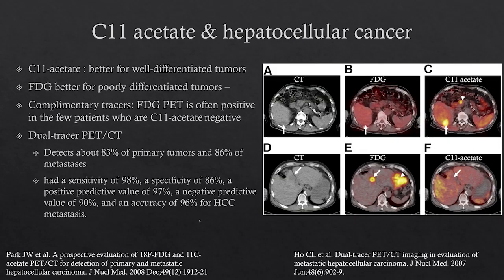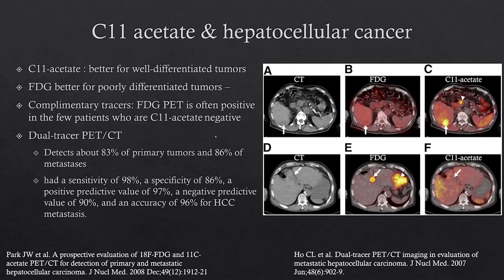Another tracer used along with FDG for hepatocellular carcinoma is C11-acetate. Similar to choline, it's better for more well-differentiated tumors while FDG is better for poorly differentiated tumors — they complement each other. For example, you may see no uptake on FDG but focal uptake on C11-acetate for one lesion, and conversely another lesion with focal uptake on FDG but no uptake on C11-acetate. Lesions not avid for one tracer may be avid for the other. By combining the two, we can detect about 83% of primary tumors and about 86% of metastases.